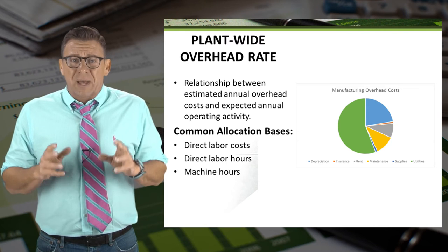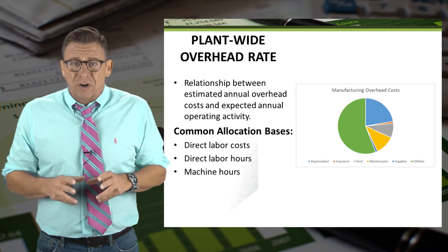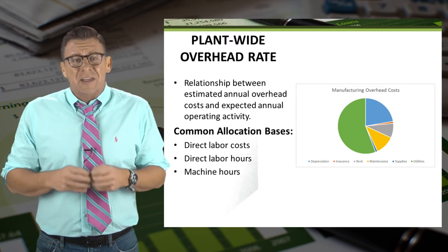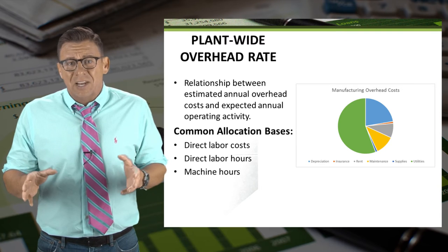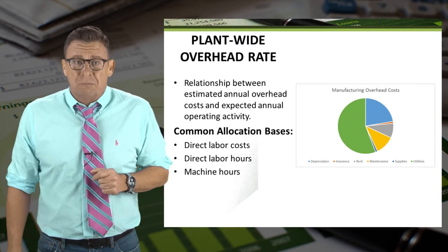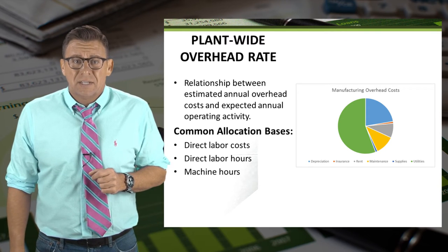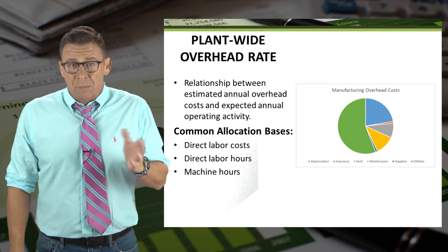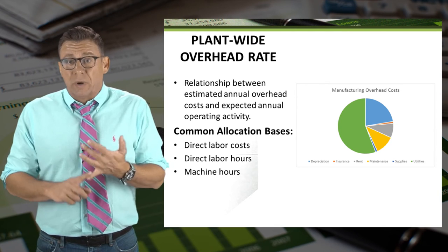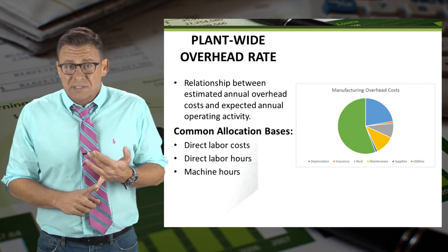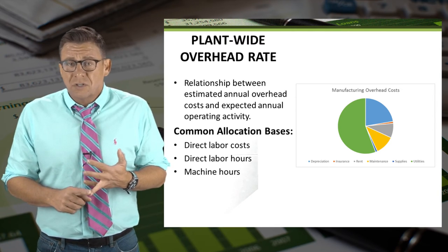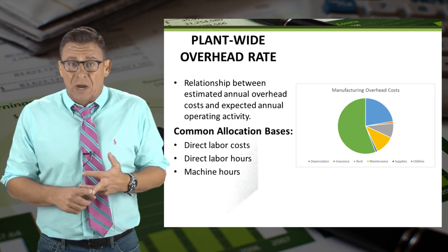With a plant-wide overhead rate, all of the manufacturing overhead is totaled and then allocated to products based on an allocation basis. Common allocation bases are direct labor costs, direct labor hours, or machine hours.